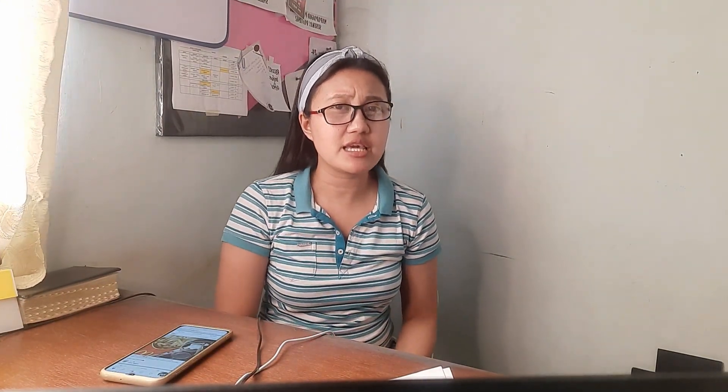Lastly, we have ethnographies, oral history, and case study. This technique involves studying a single phenomenon, examines people in their natural setting, and uses a combination of techniques such as observation, interview, and surveys. Ethnography is a more holistic approach to evaluation, and the researcher can also have a confounding variable.